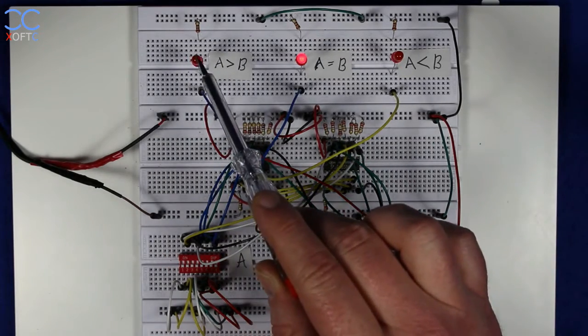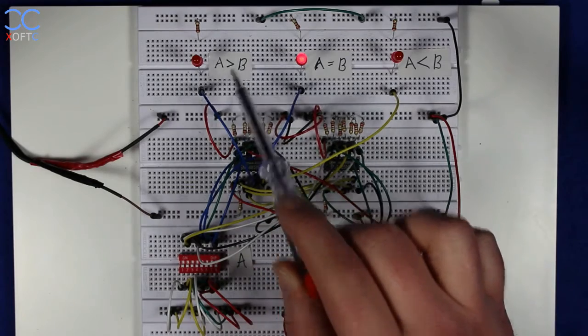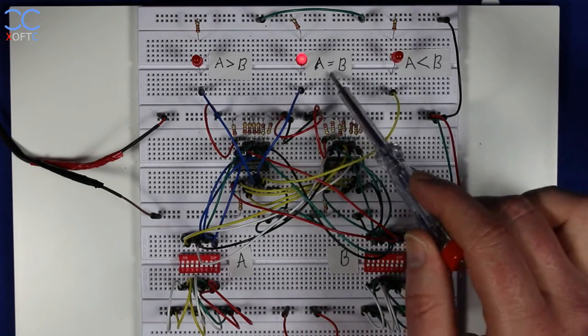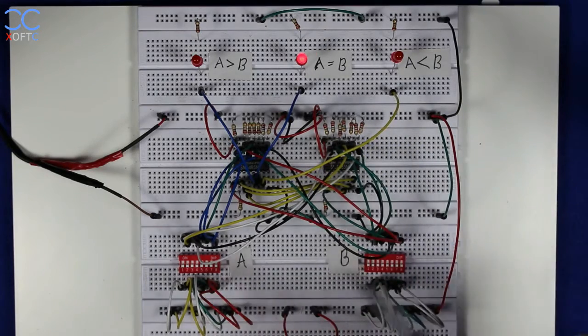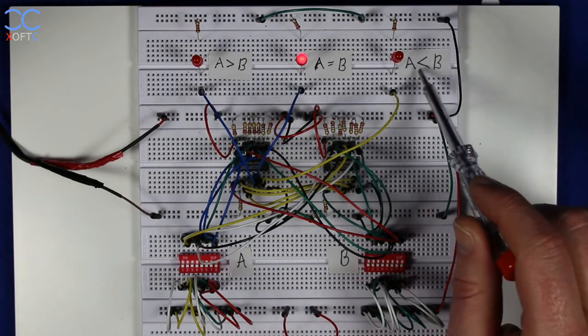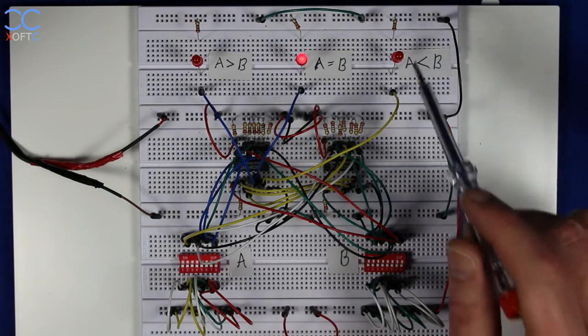You can see that this one will go high if A is larger than B, and this one is already high, and that means that A equals B, and that's because we have zeros on both inputs right now, and this one will go high when A is smaller than B.